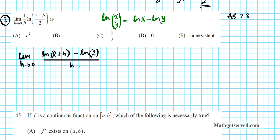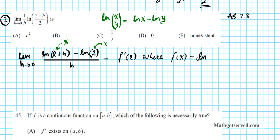This is the derivative of a function. Can you tell what the function is? Whatever you add to h is basically what x is, so x equals 2. This is another way of saying: find f prime of 2, where f(x) equals the natural logarithm of x. We find the derivative first, then evaluate at x equals 2. So f prime of x equals 1 over x, and therefore f prime of 2 equals 1/2. The final answer is option C.